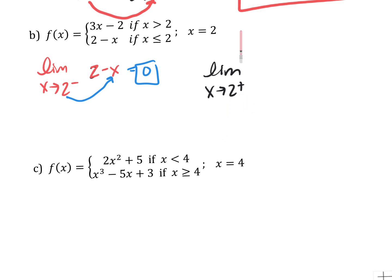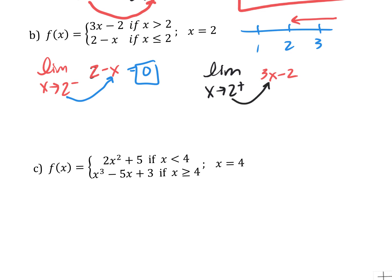As x values approach 2 from the right — those numbers are bigger than 2 — I use the top equation: 3x minus 2. Plugging in 2: 3 times 2 minus 2 equals 4. Do these equal each other? No — from the left I get zero, from the right I get 4. So this is a jump discontinuity because the limits didn't equal each other.